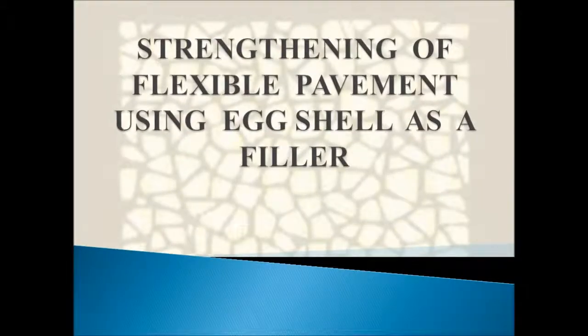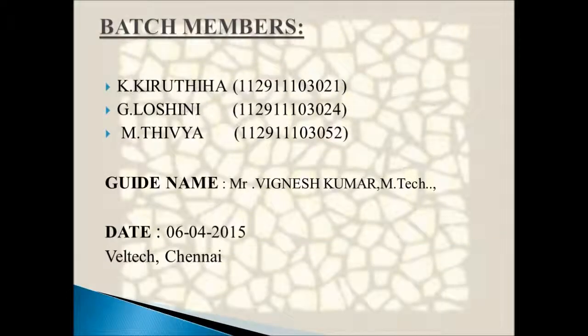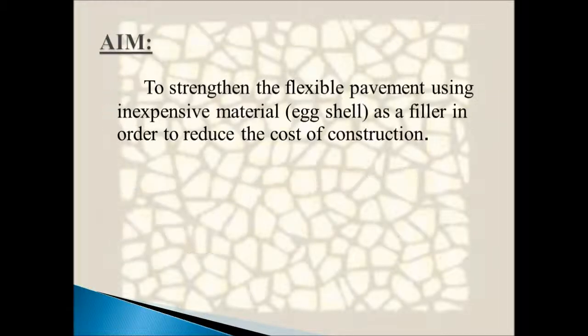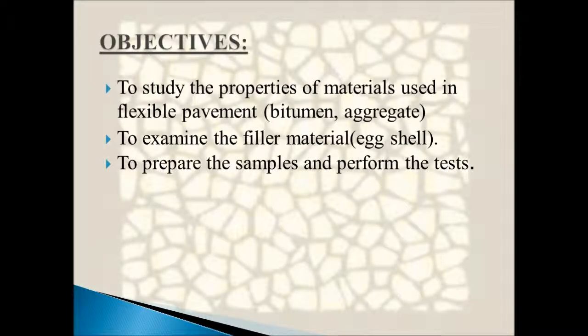Strengthening of Flexible Pavement Using X-Shell as a Filler. The main aim of the project is to increase the strength of flexible pavement by adding a suitable filler like X-Shell, which is inexpensive, thus reducing the cost of construction. The objectives are to study the properties of materials used in the pavement, to examine the filler material, and to prepare the samples and test them.